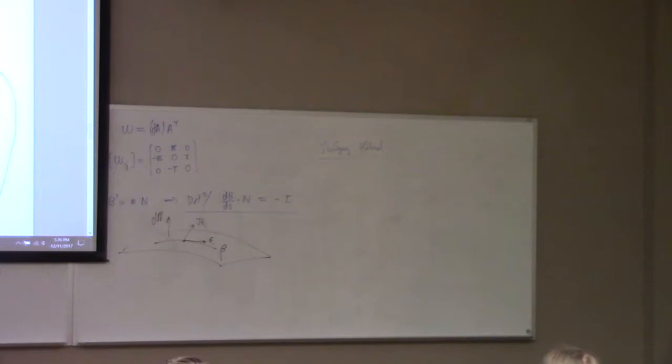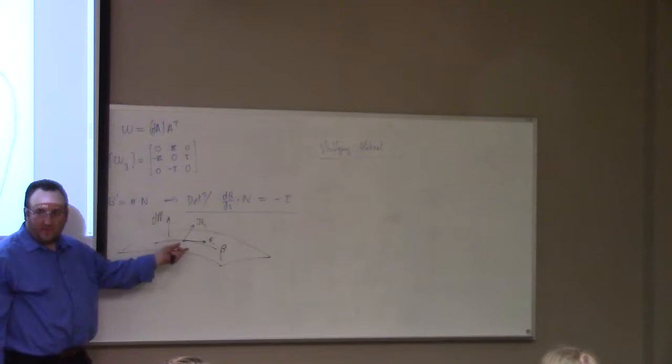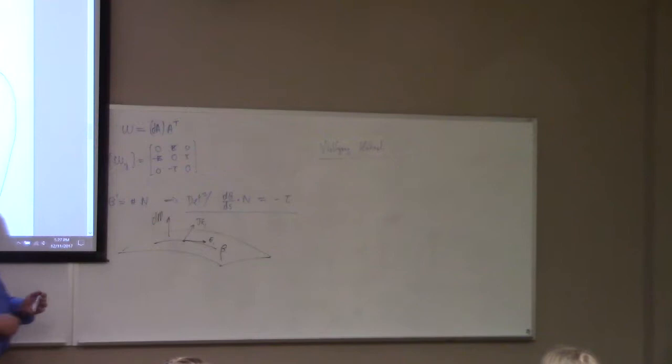Frenet theory says the unit normal is towards the center of the osculating circle. But this notion of normal — J of E1 — is just based on the surface: which direction you're rotating 90 degrees in the tangent plane.